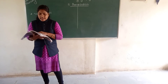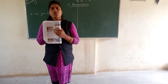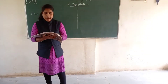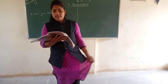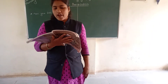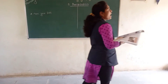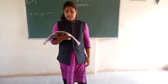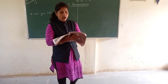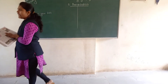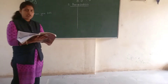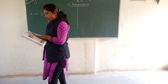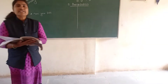Now the next picture is about hailstones. Because of hailstones, crops get destroyed. The additional information given is: sometimes hailstones destroy the standing crops in the field. Hailstones also damage fruits, trees, and standing crops.